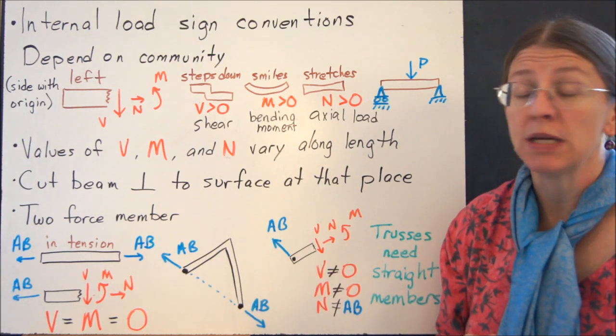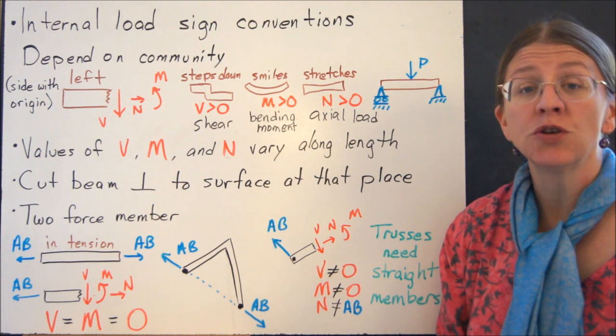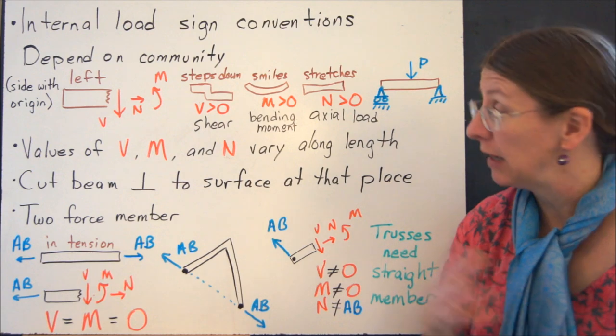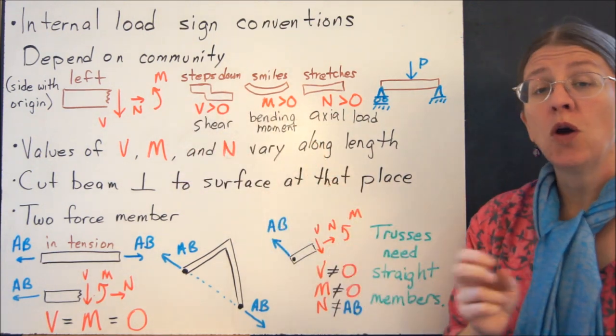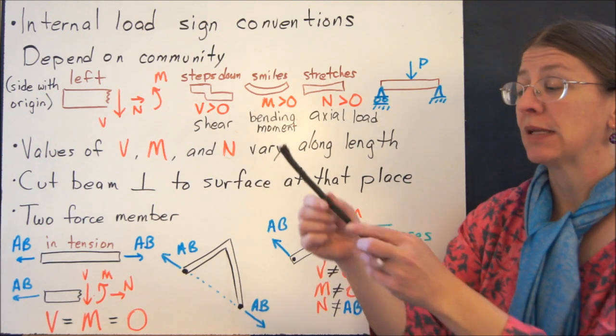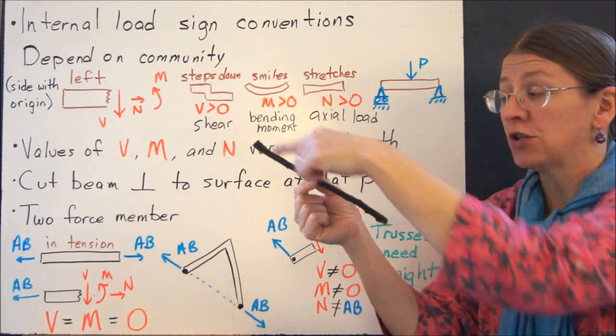Now like before with frames and machines, it doesn't make any difference whether you do the right-hand side or the left-hand side. As long as you're following the correct sign conventions, you will get a number that corresponds to these three things. It is worth noting that I want you to cut perpendicular to the surface. So if you have a beam that's at an angle like this, I'm talking about V as perpendicular to the beam itself.